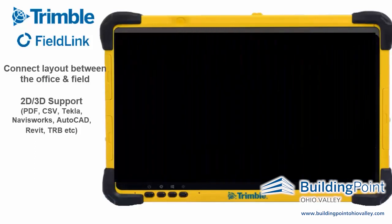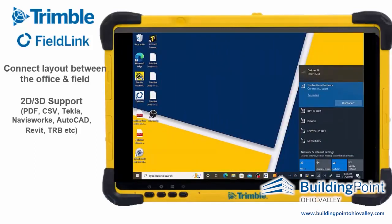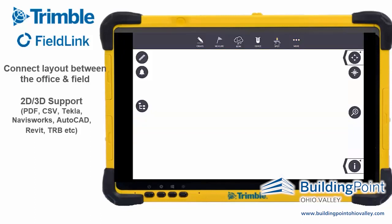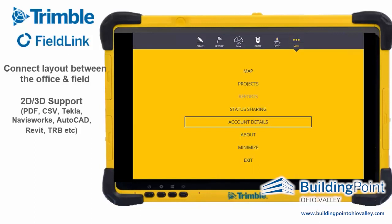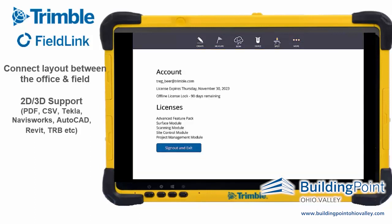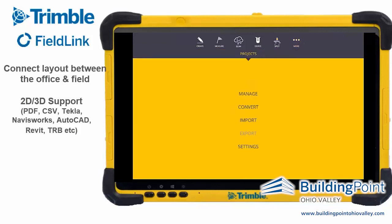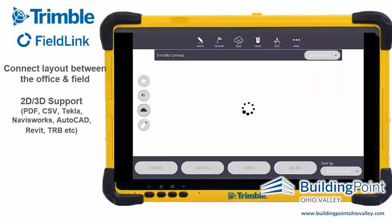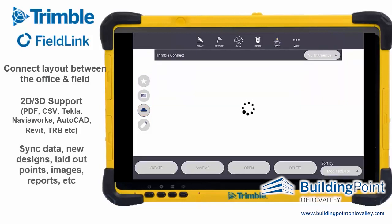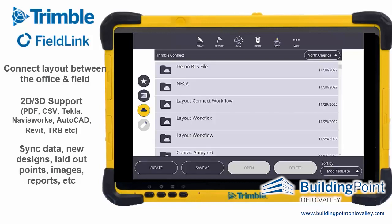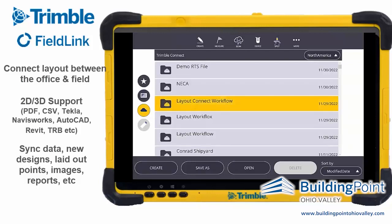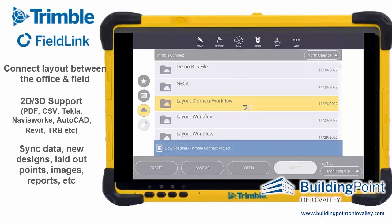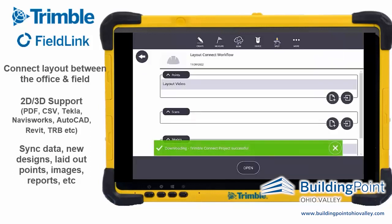Now we'll hop into the tablet — this is what it looks like out in the field. We're going to connect up to Trimble Connect and then start to pull and sync that project down. Go into Projects, then Manage, and hit the cloud icon on the left-hand side. That takes us into Trimble Connect, where we can access different projects, models, layout points — everything from layout to scanning can use this to import models or project data, reducing the need to send models via USB.